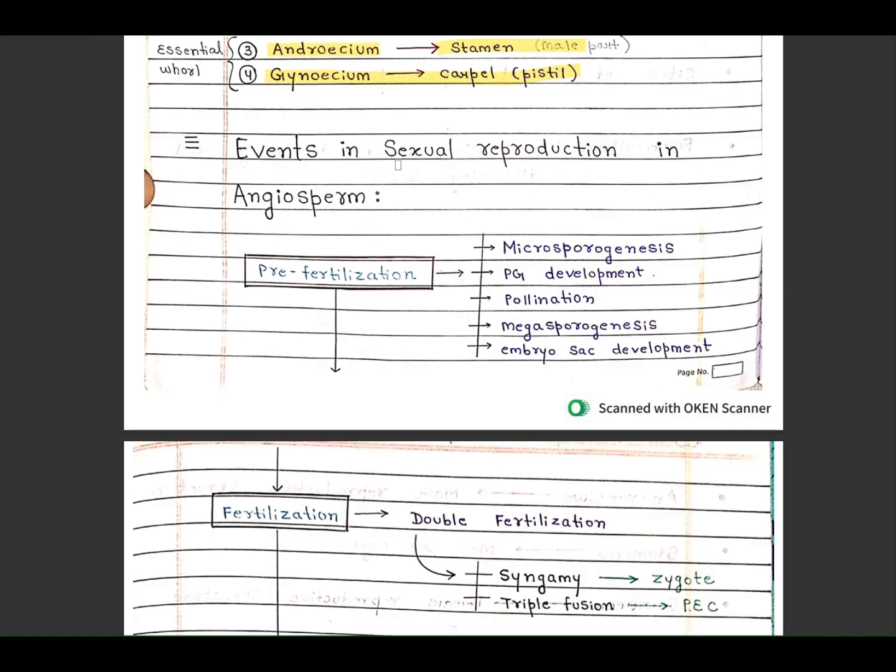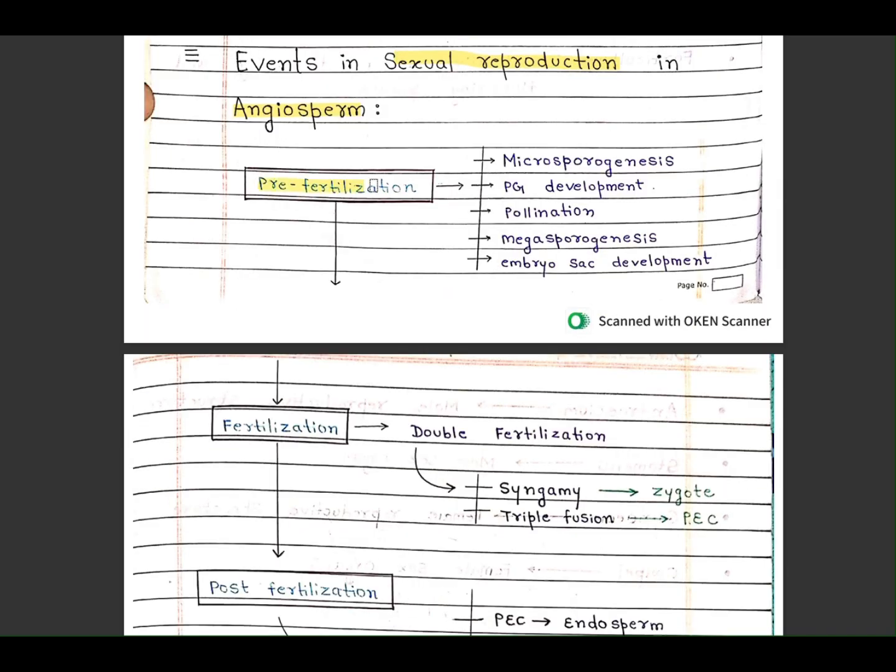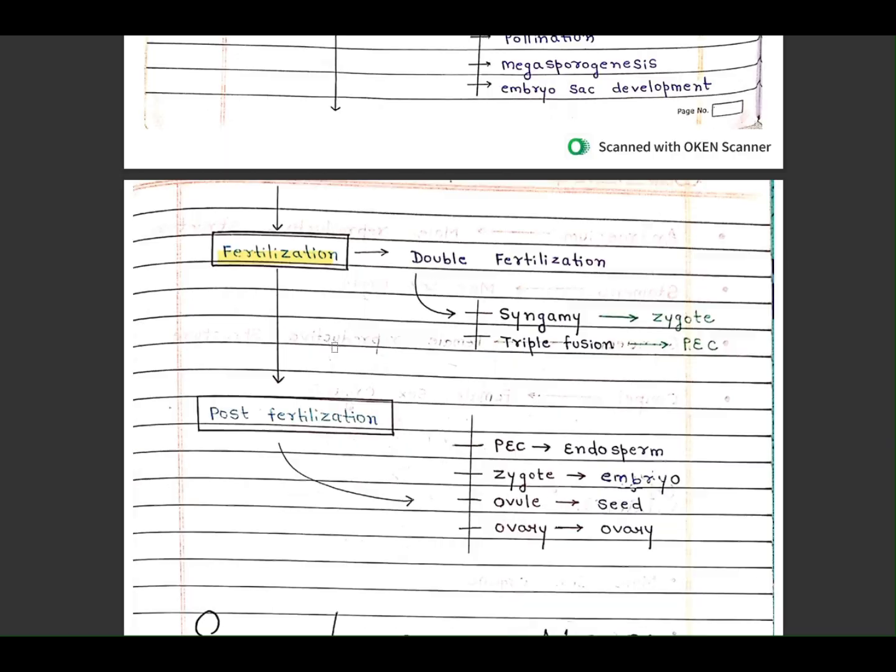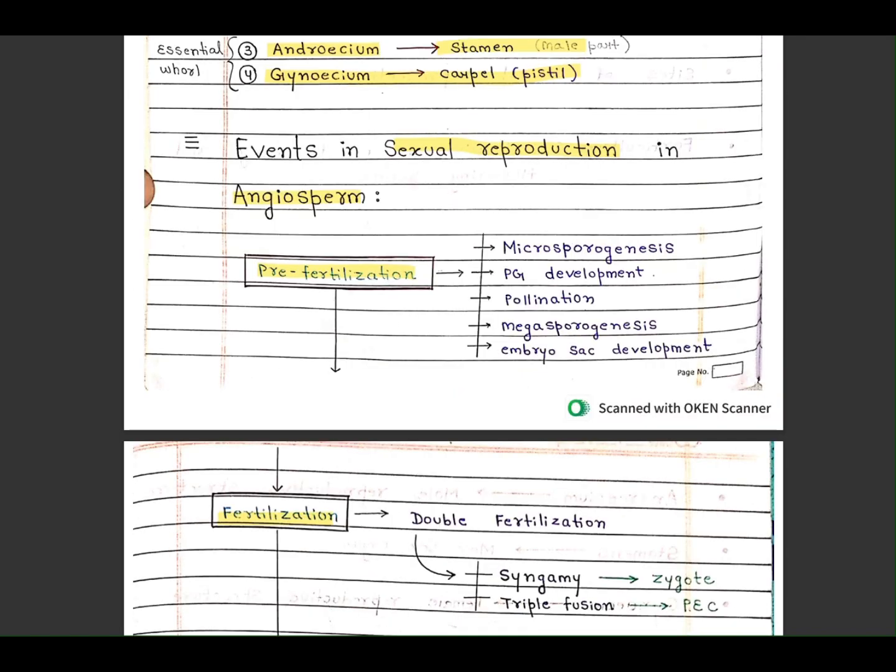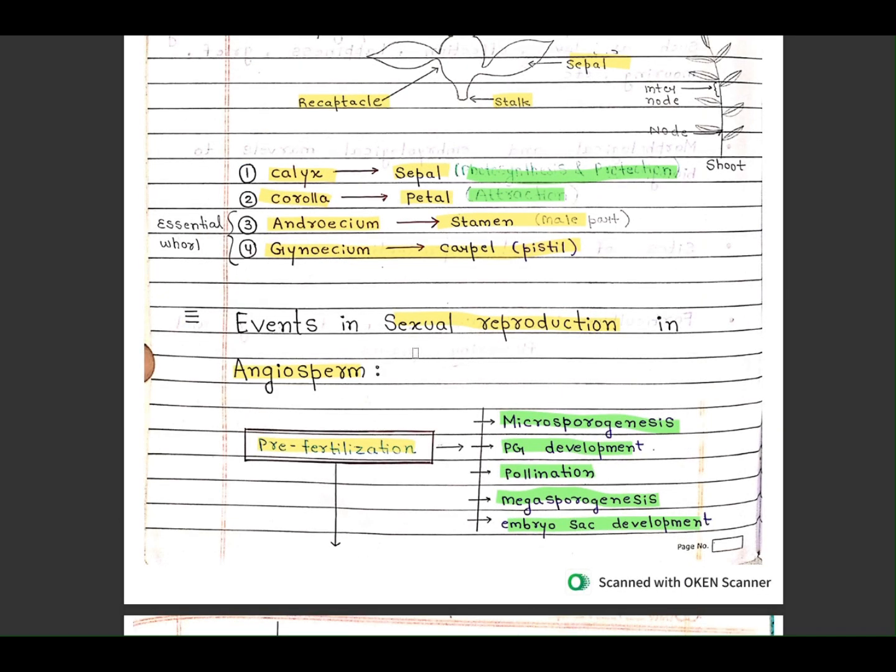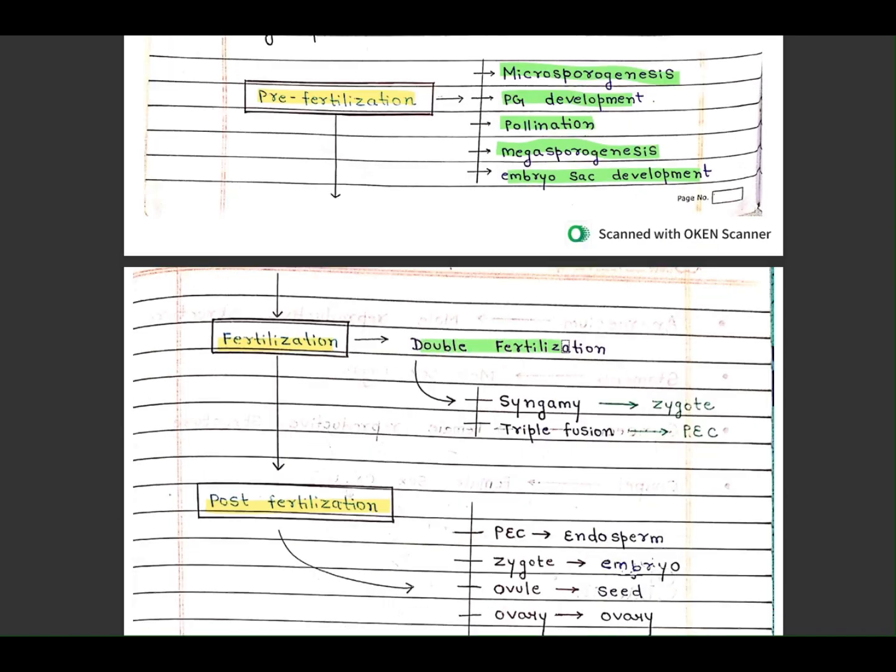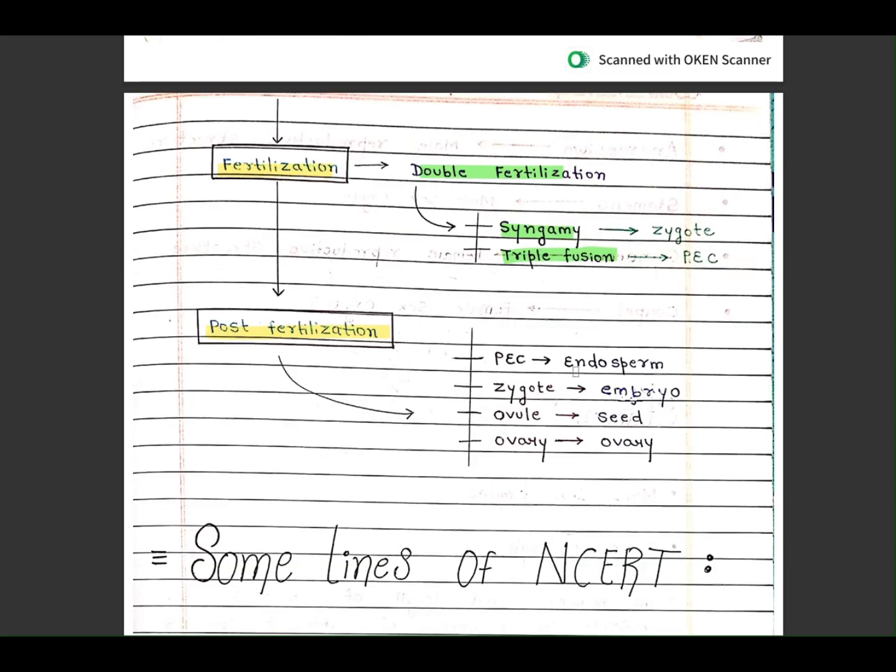Events that occur in sexual reproduction in angiosperms. The events are pre-fertilization, fertilization, and post-fertilization. Let's see what comes under it. In pre-fertilization: microsporogenesis, pollen grain development, pollination, megasporogenesis, embryo sac development. In fertilization: double fertilization, syngamy, and triple fusion occur. In post-fertilization: PEC, endosperm, zygote, embryo, ovule to seed, and ovary to fruit.